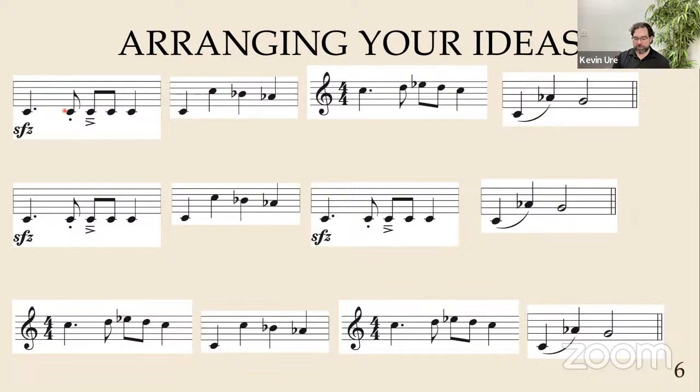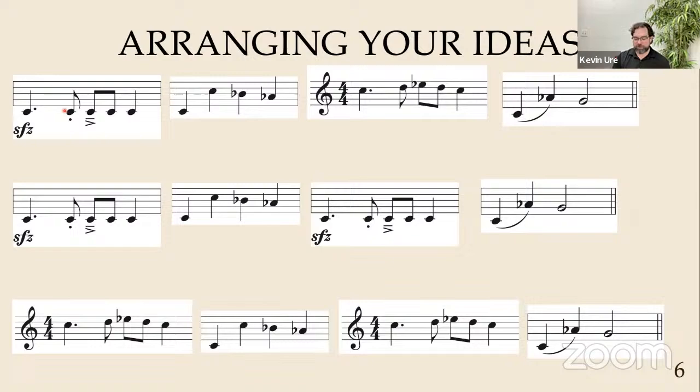So to summarize day three: first, write out your motives in triplicate by hand — writing by hand is important. Then cut out each motive and place each one in front of you. Rearrange them in different ways to see how the different arrangements change the melody. Then from there, try to create one, two, or three different melodies — maybe even four — using different arrangements of the available motives that you cut out. That is day three. And again, this is all just prep work.